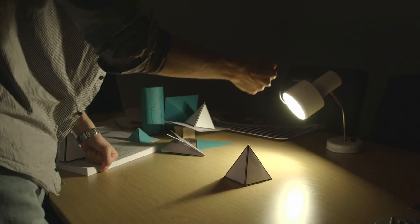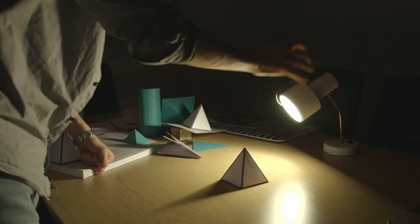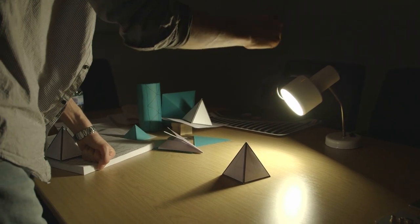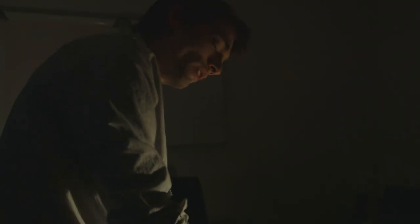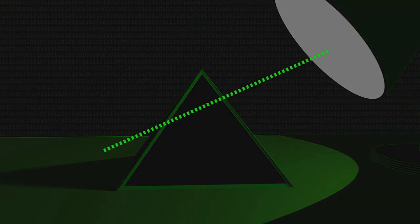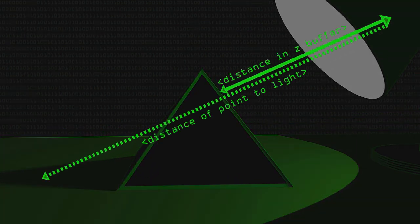What we can then do is do a lookup into the Z buffer from the light pass that we rendered before, and we can find out how far away that point is from the light, and compare it to the value in the Z buffer.